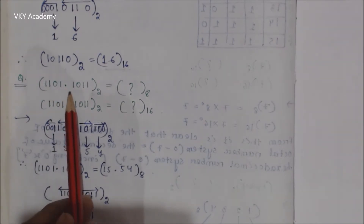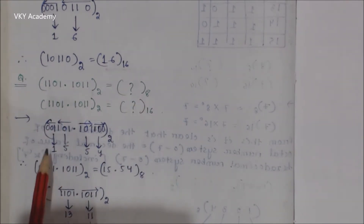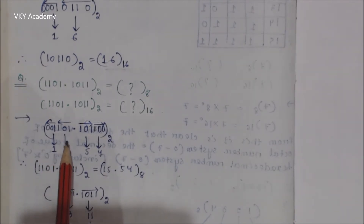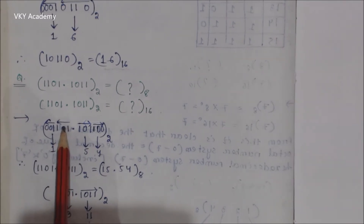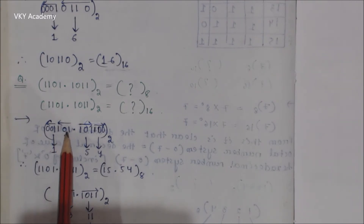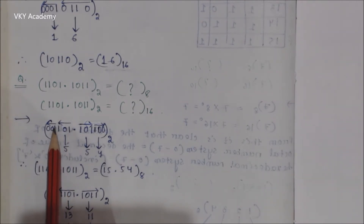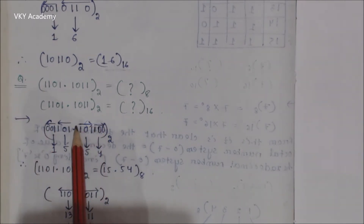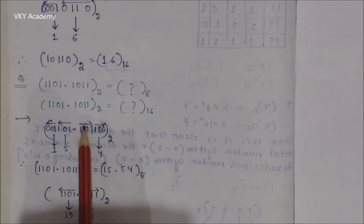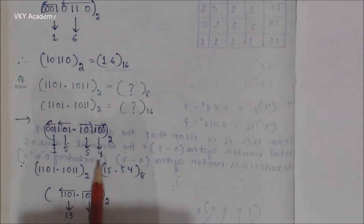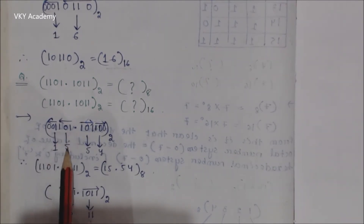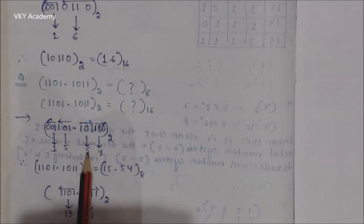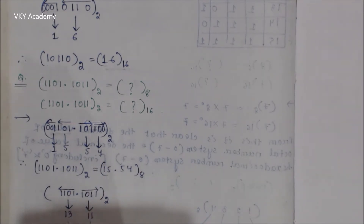Now let us convert a binary number that has a binary point into octal. For the whole number part, starting from the LSB and moving toward the MSB, I take groups of 3 bits: first group is 101, second group is 100. For the fractional part, moving to the right: first group is 101, second group is 100. The equivalent octal for 100 is 4, for 101 is 5, for 100 is 4, and for 101 is 5. So the octal number is 15.54.